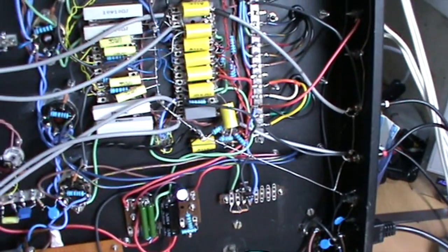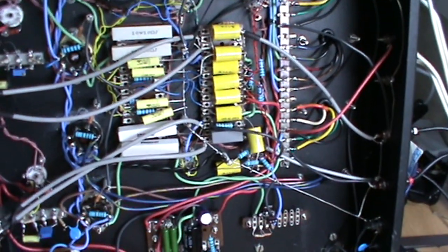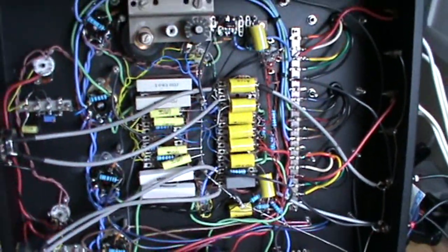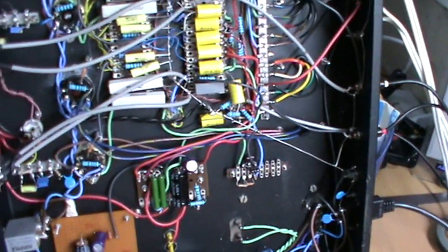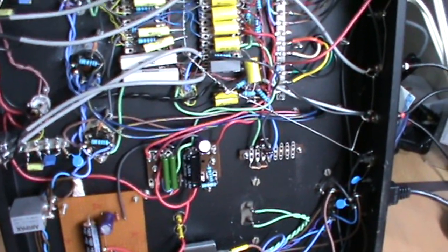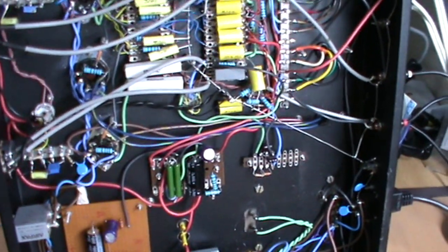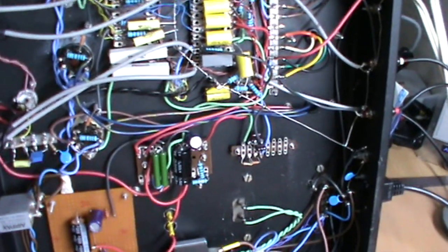With RF transmitters you can get away with earthing things to the chassis, but with audio equipment you've got to have it at a single point, otherwise you get ground loops and problems which cause hum and distortion. That's more or less it - let's see what it sounds like.